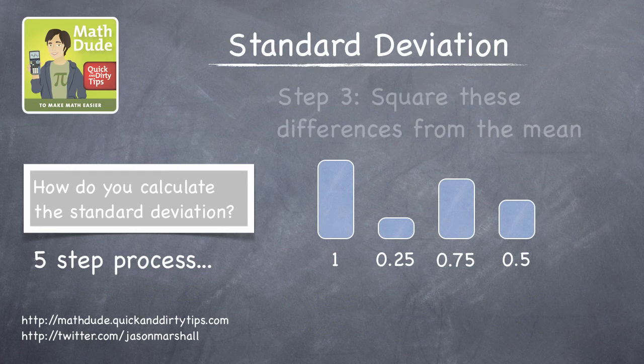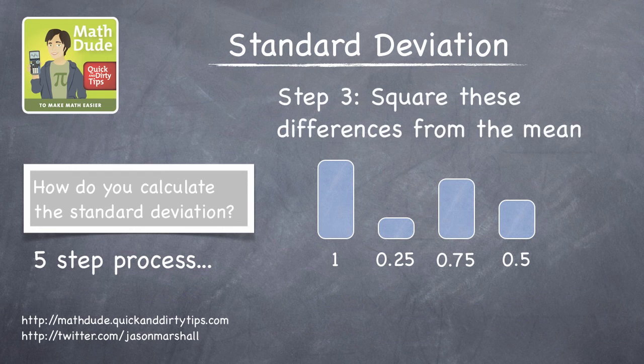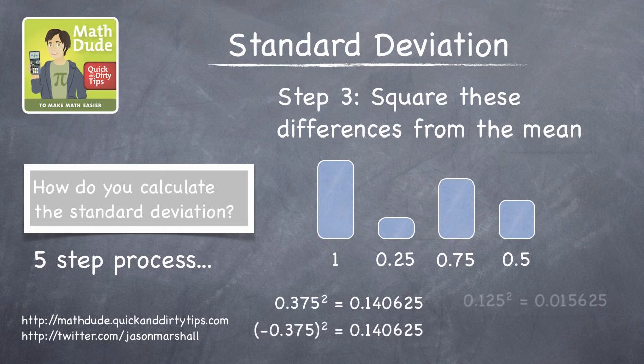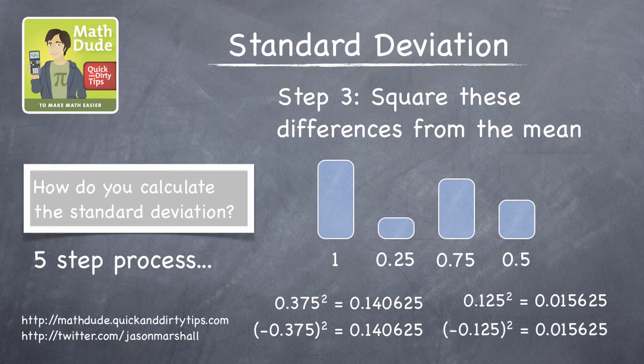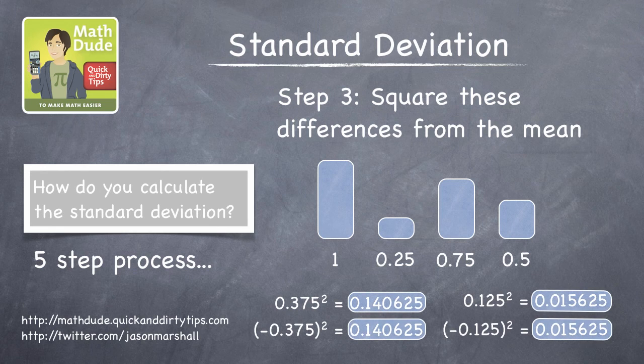Step three is to calculate the square of these differences from the mean. Notice that 0.375 squared and negative 0.375 squared have the same value, and the same is true for 0.125 squared and negative 0.125 squared.